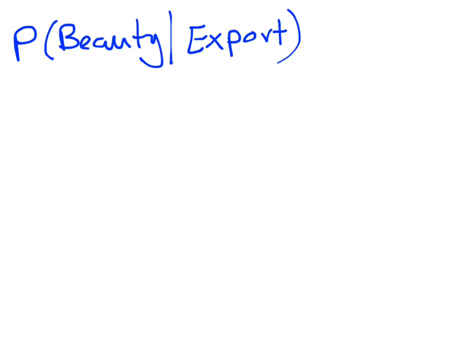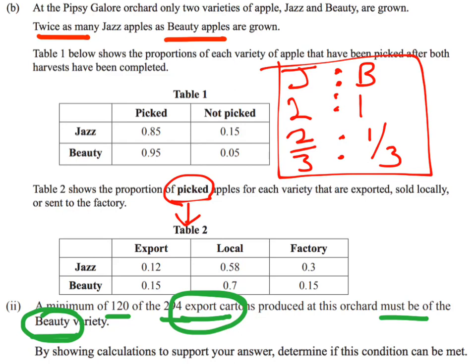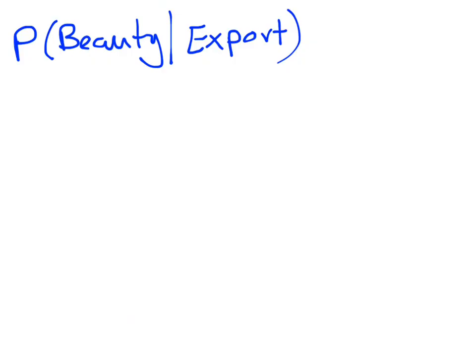What we ultimately need to find is the conditional probability of getting a Beauty apple given that it is an export apple. Once we have that, we can calculate the expected value and determine the number of cartons. To work this out, I'll first calculate the probability of a Jazz apple being sent for export.